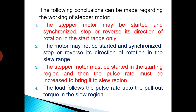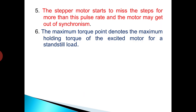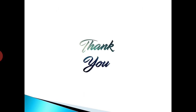The following conclusions can be made regarding the working of the stepper motor: The stepper motor may be started, synchronized, stopped, or have its direction reversed in the start range only. The motor may not be started, synchronized, stopped, or reversed in the slew range. The stepper motor must be started in the start region, then the pulse rate increased to bring it to the slew region. The load follows the pulse rate up to the pull-out torque in the slew region. The stepper motor starts to miss steps beyond this pulse rate and may get out of synchronism. Lastly, the maximum torque point denotes the maximum holding torque of the excited motor for a standstill load.